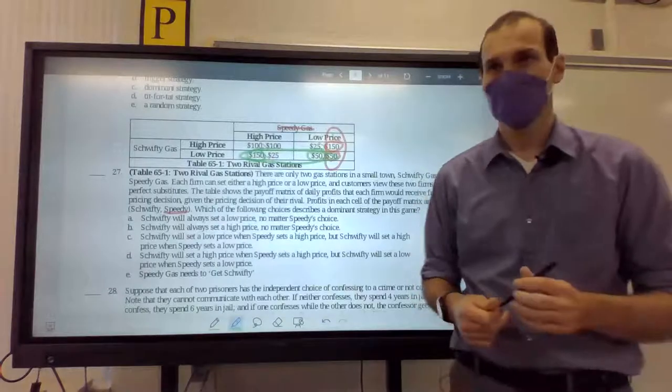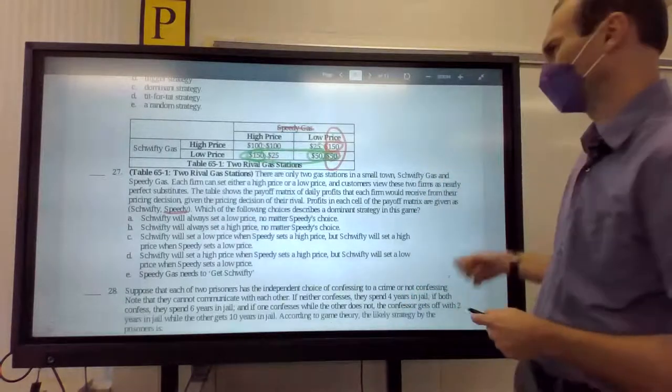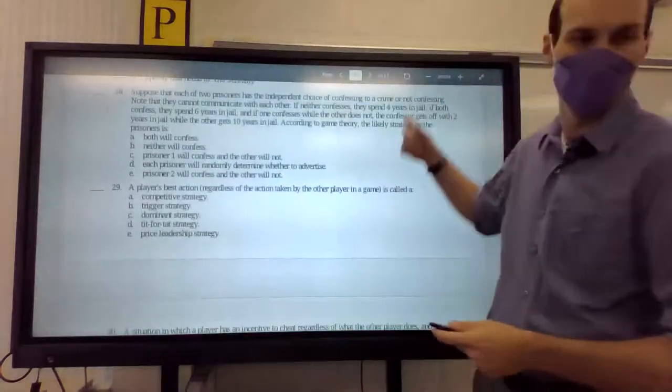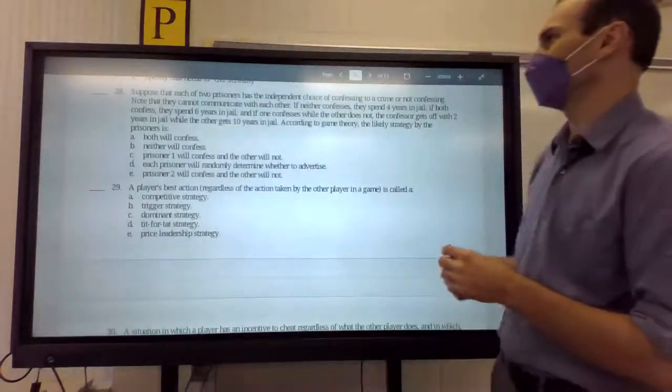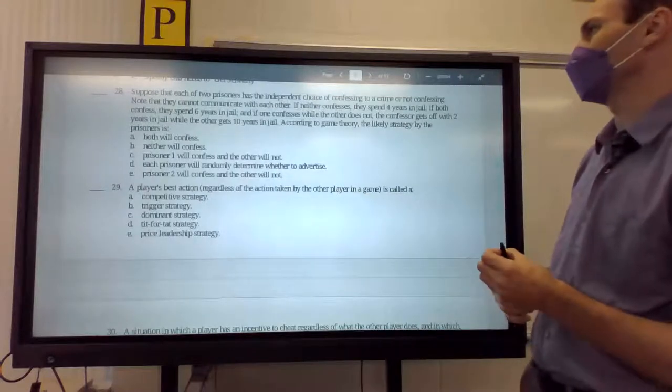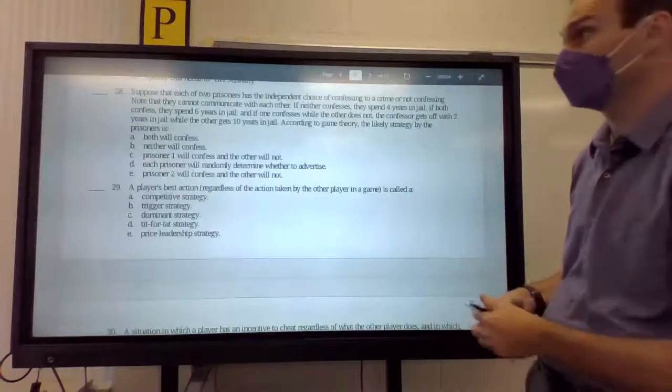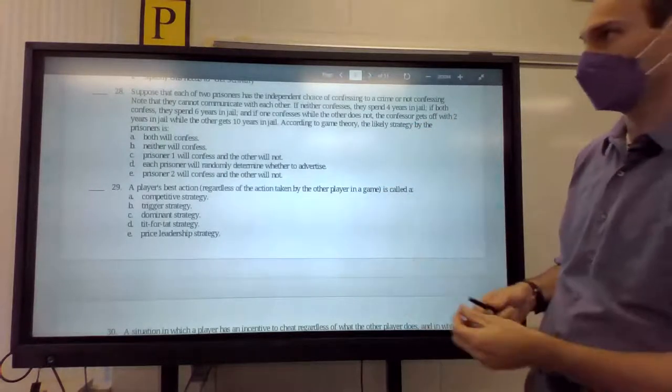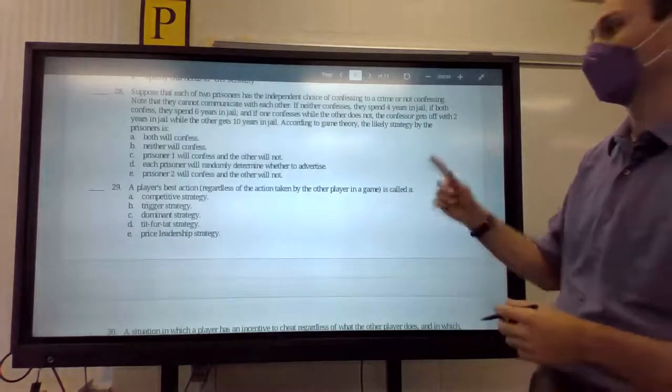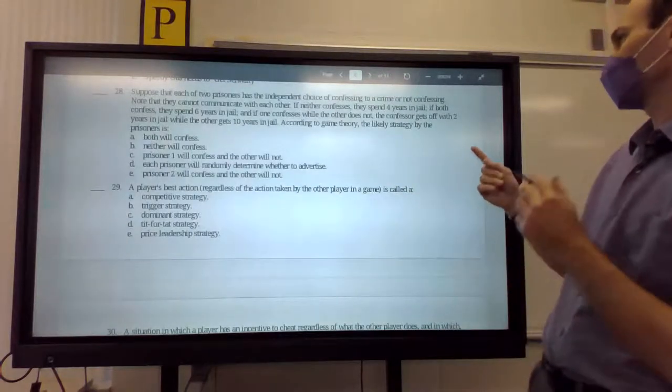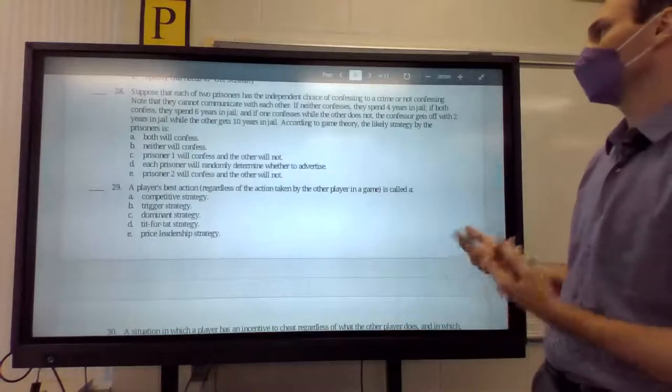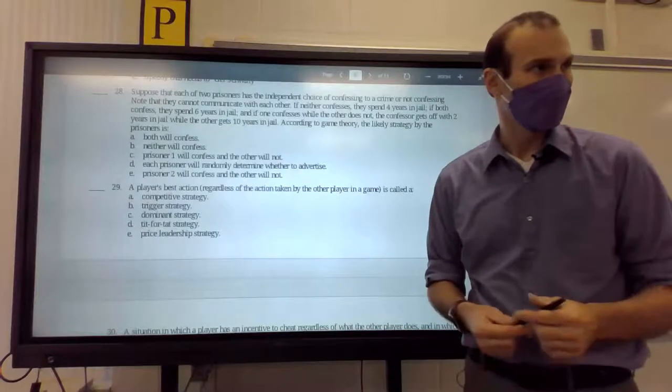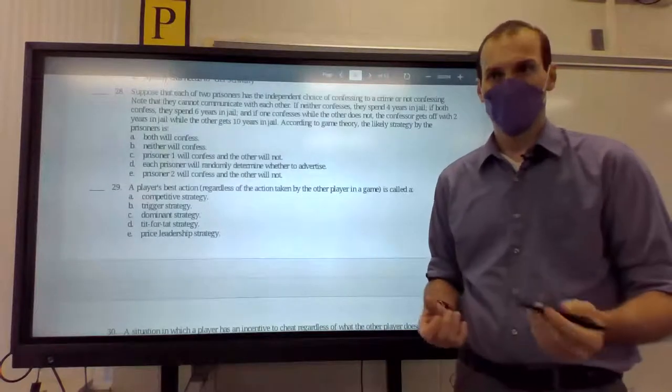All right. You guys ready to move on? I thought that was a joke. Me too. I think you like put it in there. Do I ever joke in these things? No. Okay. Ready? And 28. 28 says, suppose that each of the two prisoners has the independent choice of confessing to a crime or not confessing. No, they cannot communicate with each other. If neither confesses, they do four years in jail. If they both confess, they spend six years in jail. And if one confesses while the other does not, the confessor gets off with two years in jail while the other gets ten. According to game theory, the likely strategy of prisoners is to be, what is this, guys?